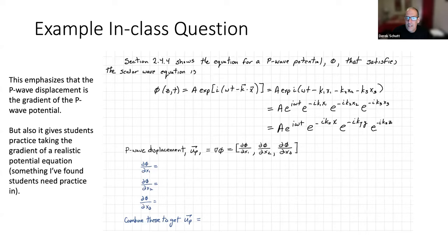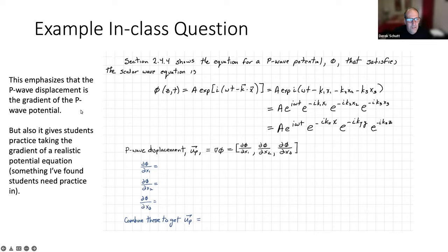For in-class questions, I base this on my experience. One of the in-class questions gives students a P-wave potential — a scalar potential — and then asks them to calculate the P-wave displacement, emphasizing that the P-wave displacement is the gradient of the P-wave potential. This is something I've found takes students a while to understand. I've also found it useful to have them actually do the calculus involved, as some students still struggle with the math even having had vector calculus before.